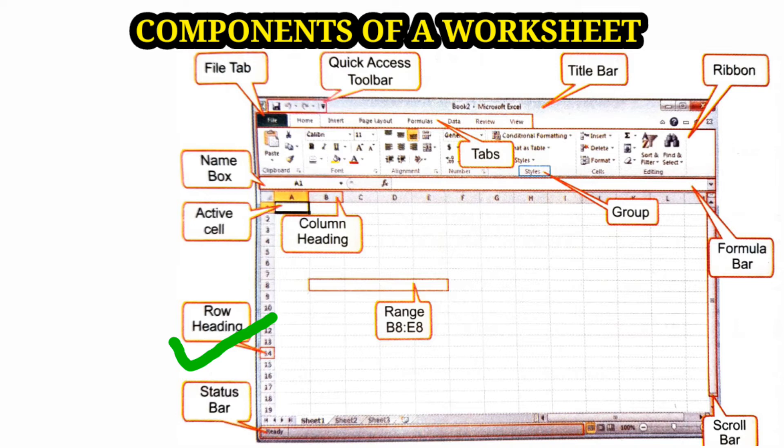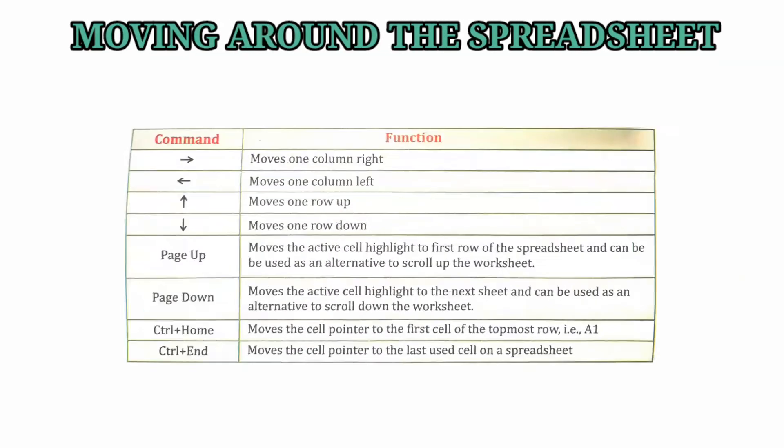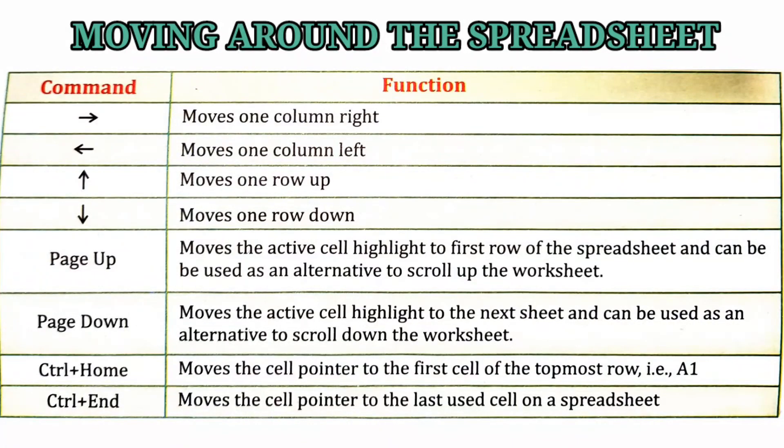Row headings - row headings are the numbers marked as 1 to 1,048,576 along the left border of the worksheet. Status bar - the status bar is located at the bottom of the Excel window.